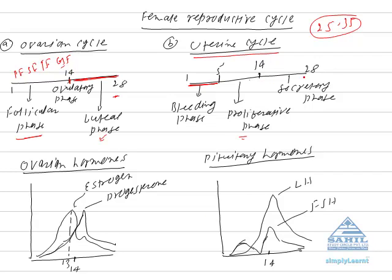The last phase or the second half of uterine cycle is called secretory phase. Because in this phase, uterus secretes some useful substances for the probable embryo. This phase is called secretory phase.